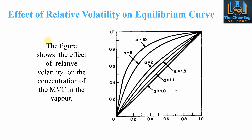Looking at the effect of relative volatility on the equilibrium curve: when alpha equals 1, the equilibrium curve lies on the 45-degree operating line where x equals y. As we increase alpha, we deviate further and further from this idealized line. Values above alpha of 1 always curve in this direction, and as alpha increases significantly, the relationship changes from linear to more parabolic. These are equilibrium lines between a more volatile component's x and y plot, and more detail is covered in the distillation course.